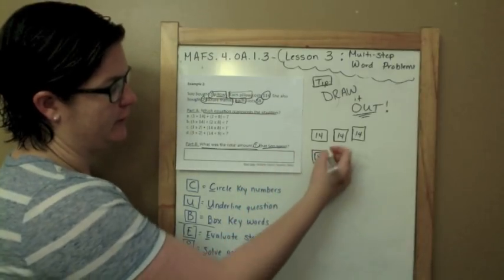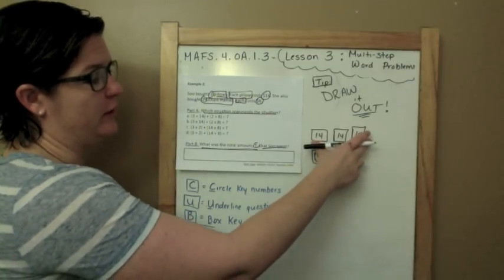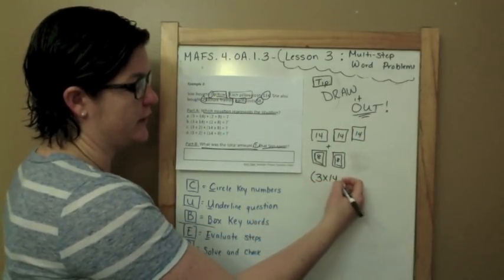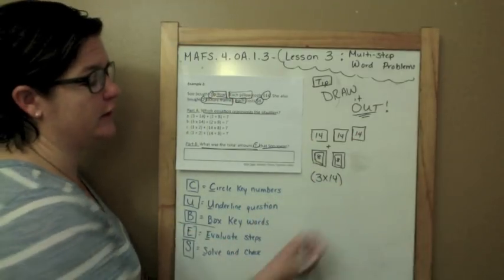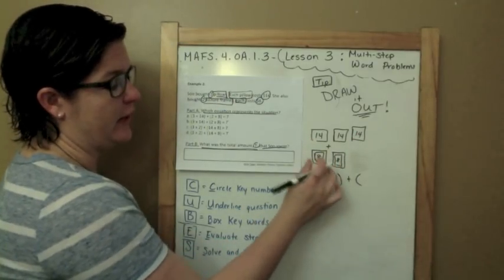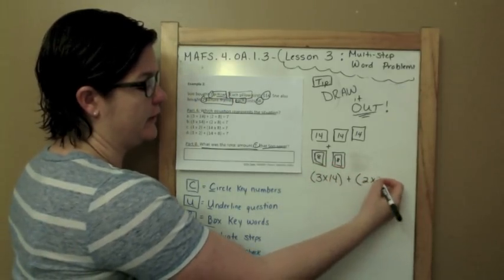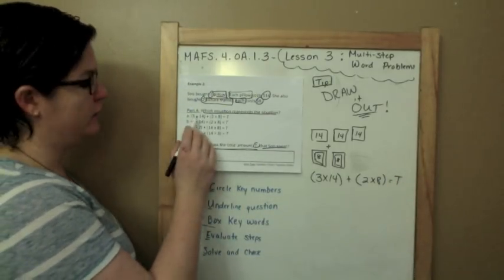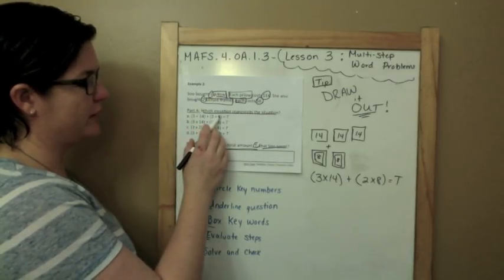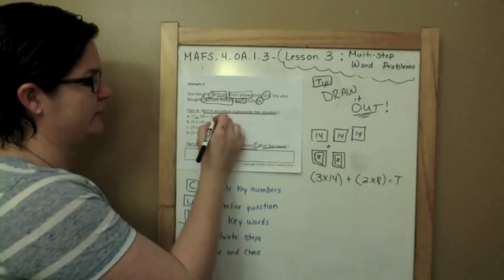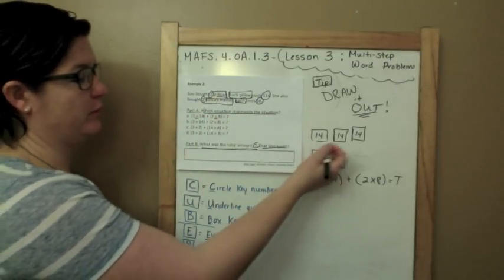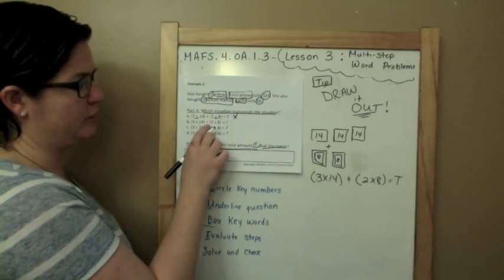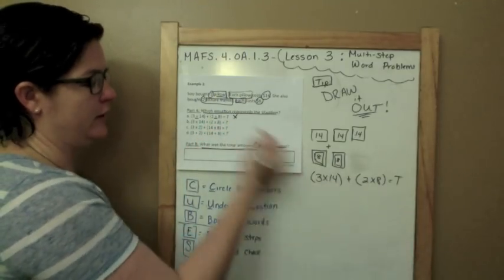Which equation represents the situation? So here I have, I'm adding really, adding these together. I'm solving out what 14 plus 14 plus 14 is, or 3 times 14, because I have 3 of the same thing, 3 groups of 14. And then I'm adding 8 plus 8, or multiplying 2 times 8, which would give me my total, which is T. So let's go over here.